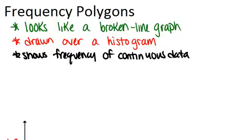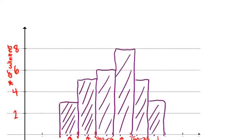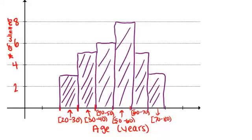All you do is look at your histogram—we have an example here—and then find the midpoint at the top of each bar and connect those to make a polygon.